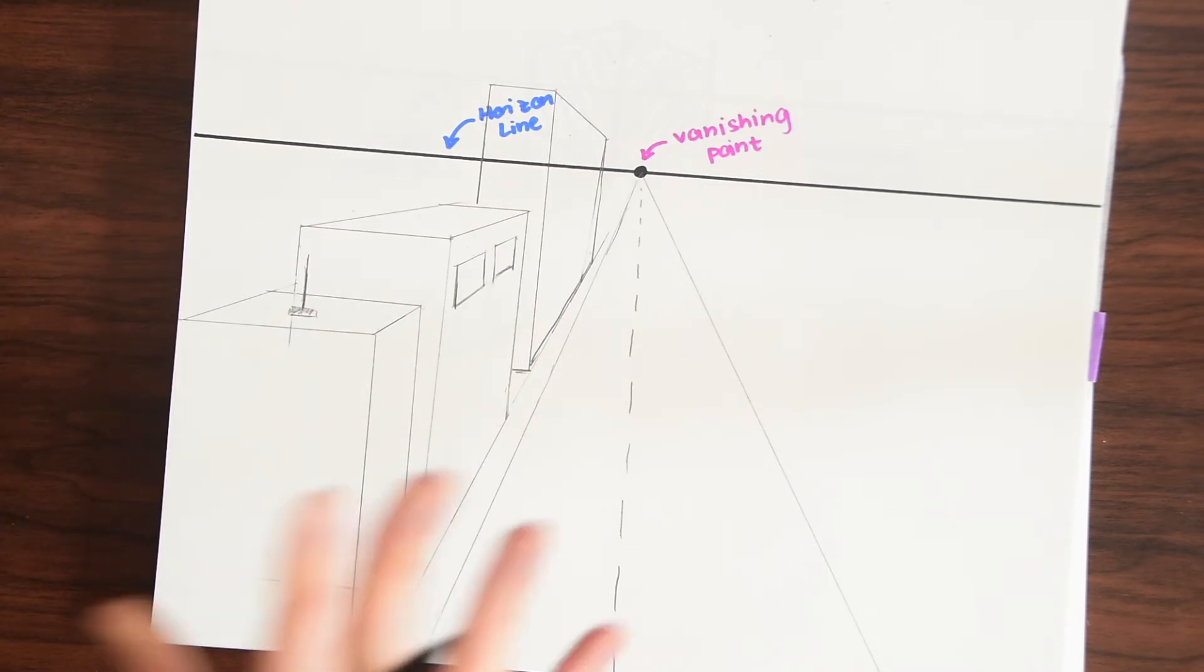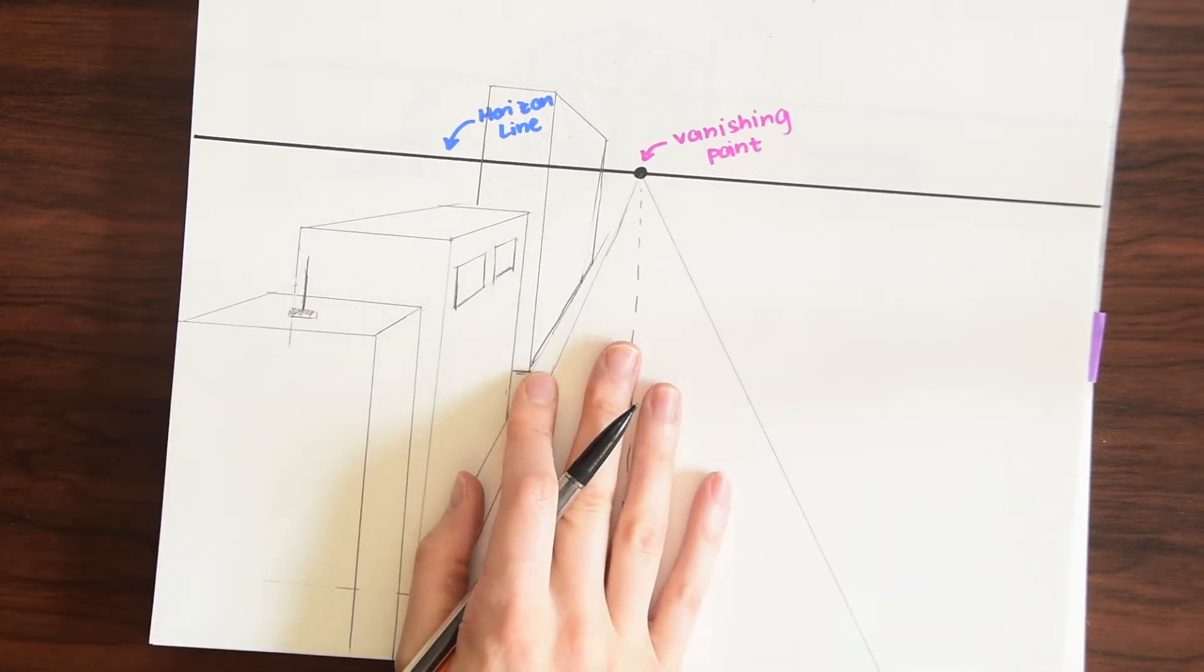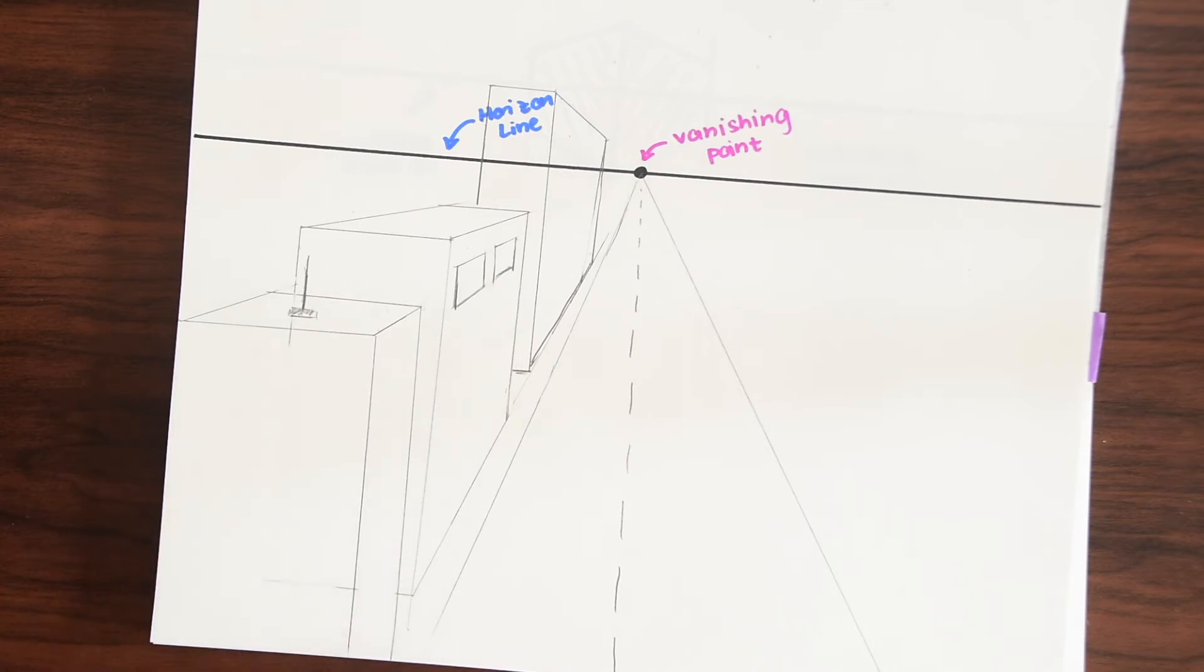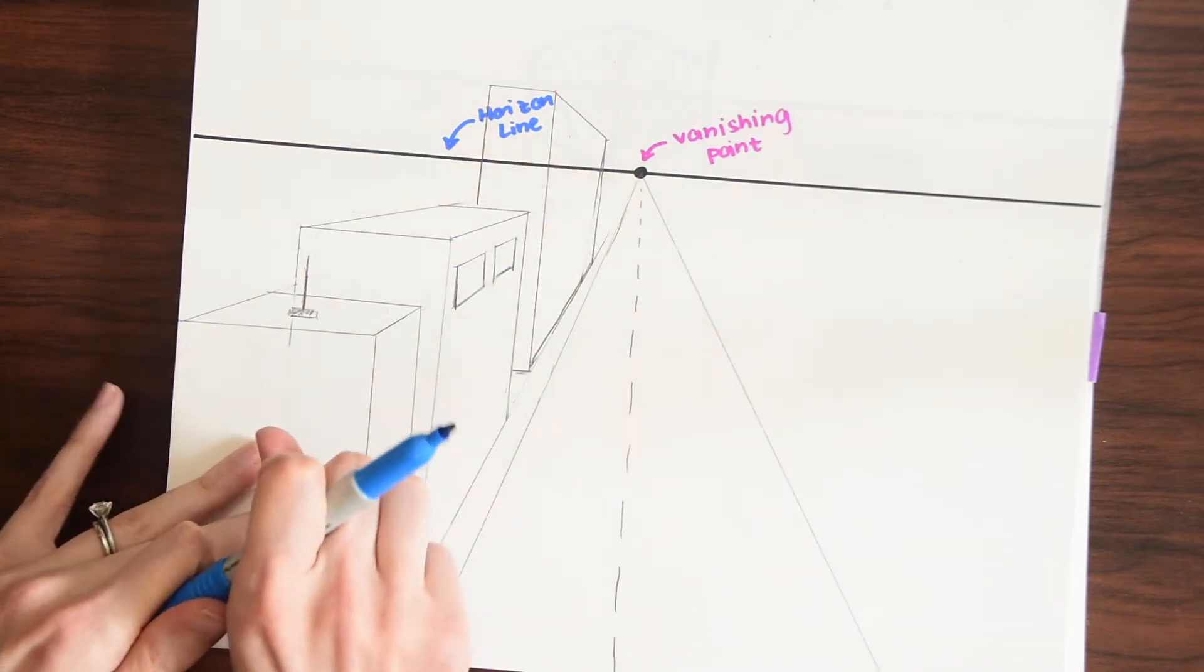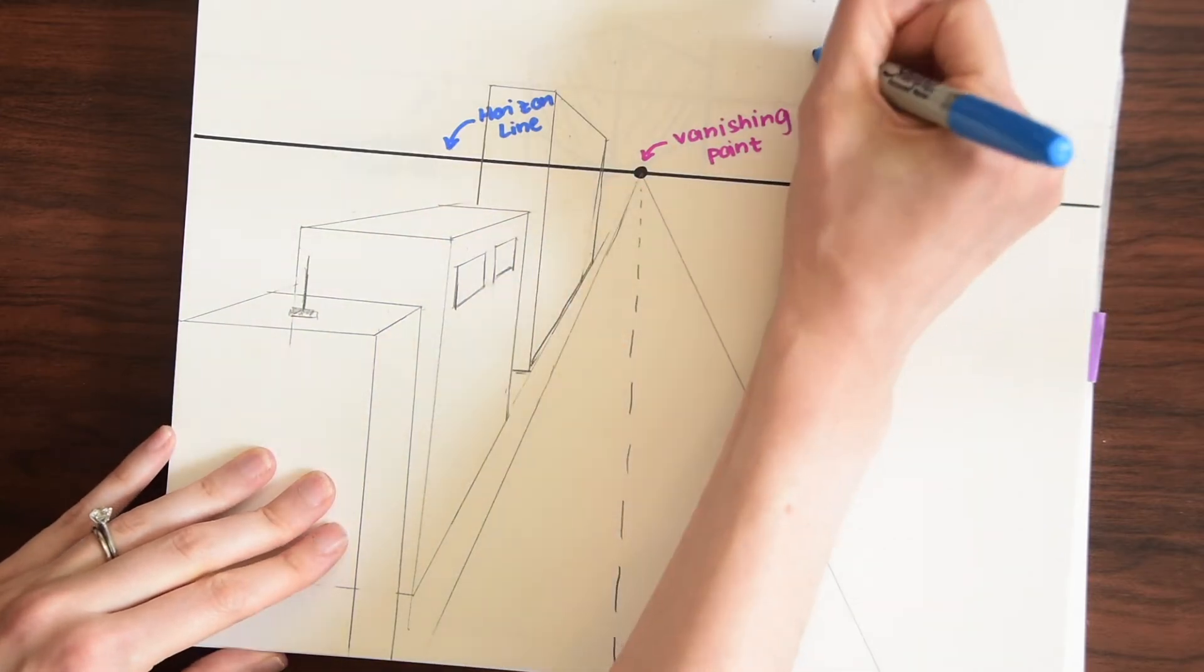So we see that already with these perspective drawings we're using parallel and perpendicular lines. We're using rulers. So we use a little bit of math. So this is called one point perspective. So it's one point perspective because using this one vanishing point.